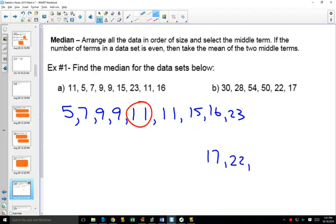And for part B, again we can start with the smallest one: 17, 22, 28, 30, 50, 54. Didn't miss any. Now we have an even number, so our median happens right here, and it's going to be the average of the two that are on either side. So the average of 28 and 30 would be 29.